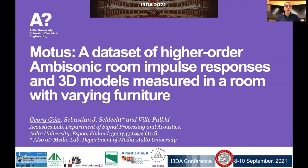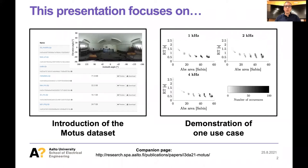My name is Georg Götz and today I want to present to you the MOTUS dataset. It's a dataset of higher order ambisonic room impulse responses and it also features 3D models. The measurements took place in a single room but the furniture was varied. In the presentation I want to focus on two things: first introducing the MOTUS dataset, and afterwards demonstrating one use case of the dataset.